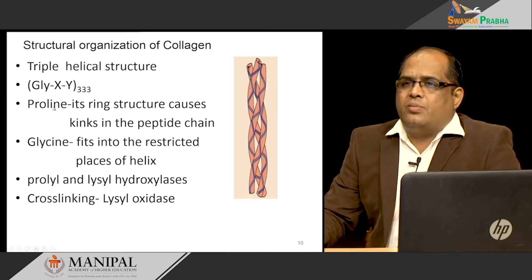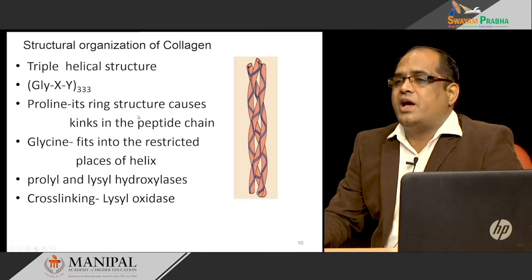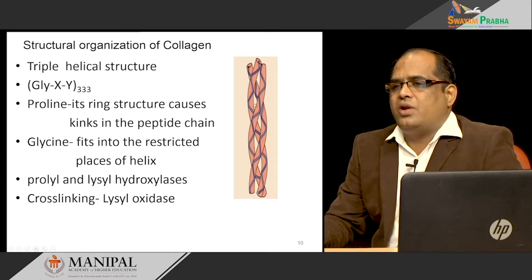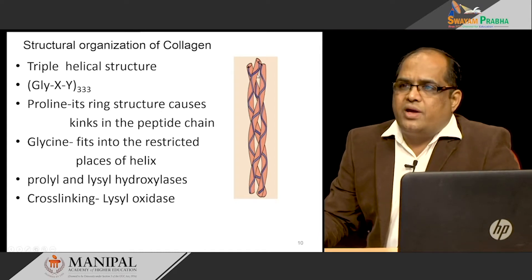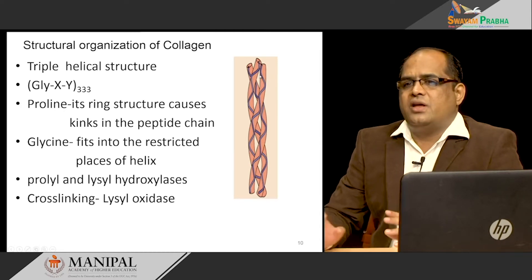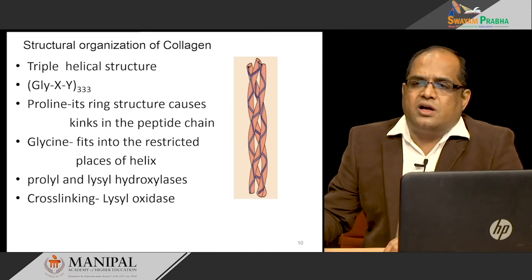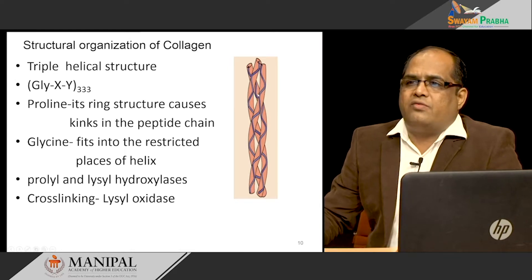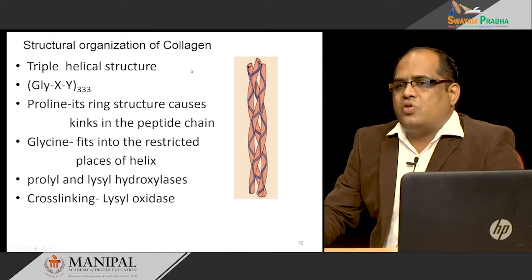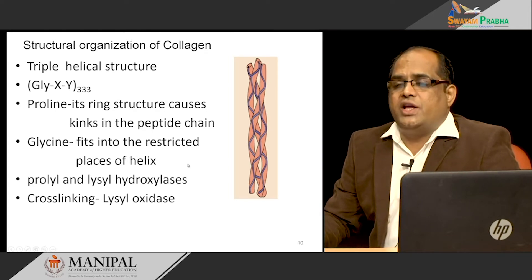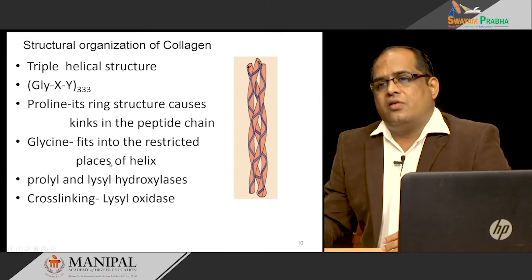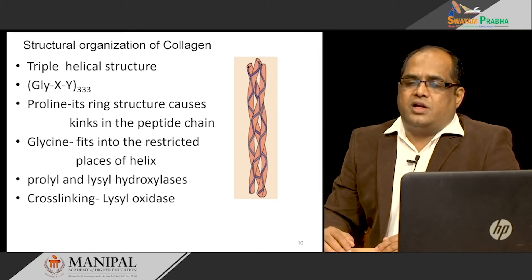Proline has a ring structure which causes bends or kinks in the polypeptide chain, giving a kink conformation to the chain. Glycine, being the smallest amino acid, fits into the restricted places — when the polypeptide chains are wound against each other in the alpha helical form, the restricted central winding region is occupied by glycine. Furthermore, proline and lysine undergo hydroxylation by the enzyme hydroxylase, and the resulting hydroxyl groups form hydrogen bonds, stabilizing the triple helical structure.